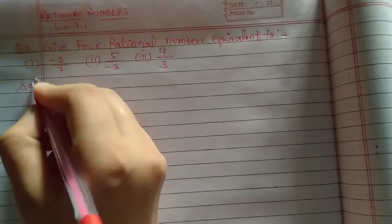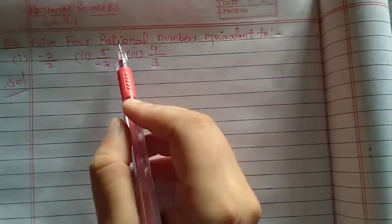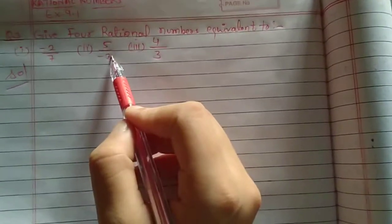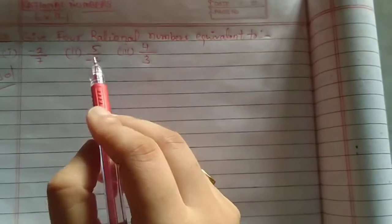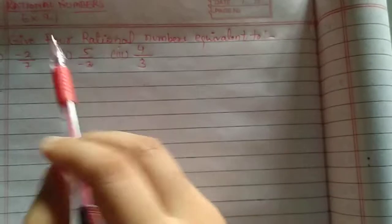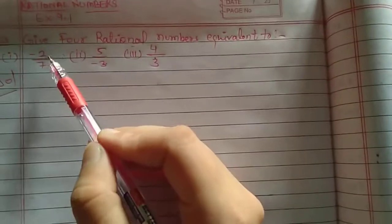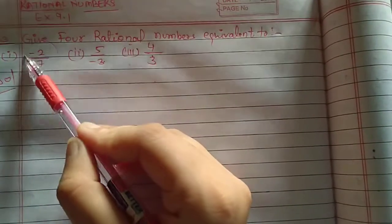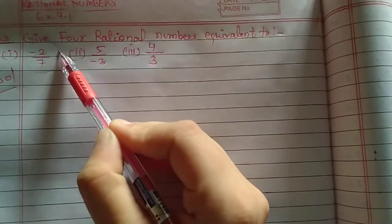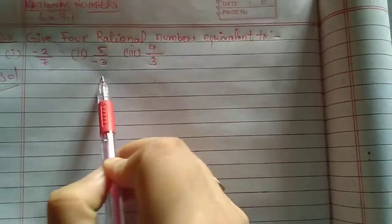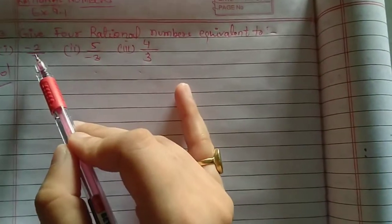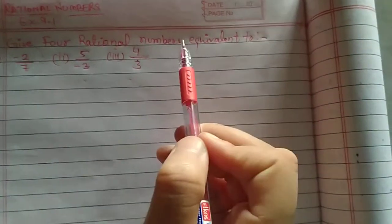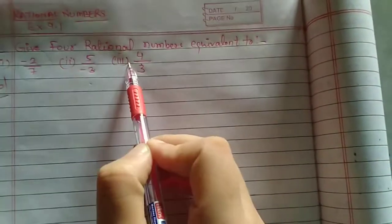So what do we need to do? We need to find 4 rational numbers which are equivalent to each of these given rational numbers: minus 2 upon 7, 5 upon minus 3, and 4 upon 3.